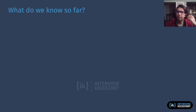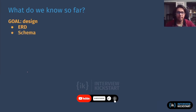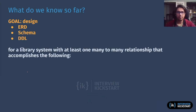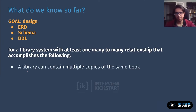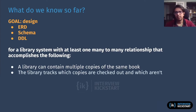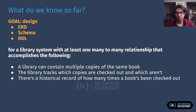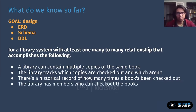After breaking it down initially, we review what we have so far. Our goal is to design an ERD, schema, and DDL for a library system with one many-to-many relationship. From the SQL questions, we've determined: the library can contain multiple copies of the same book; it tracks which copies are checked out and which aren't; there's a historical record of how many times a book has been checked out; and there are members — the people who are checking out the books — whose data we want to track.